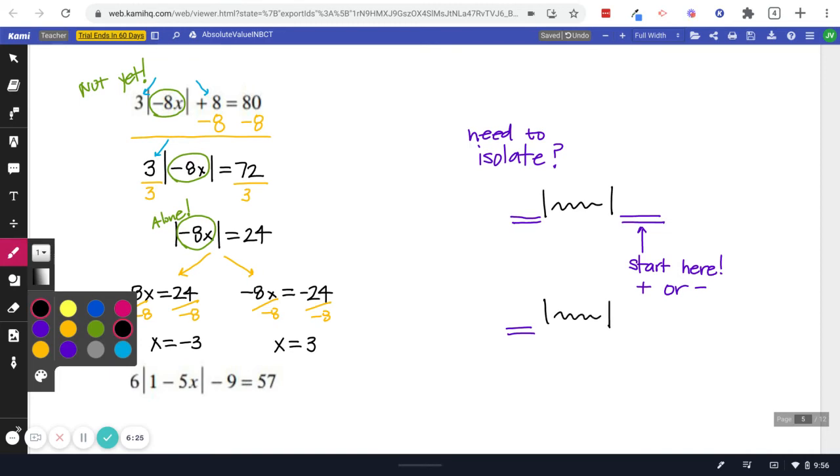When we do that, then we're going to end up with something that looks like this. Wiggle, wiggle, wiggle, absolute value.